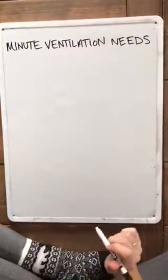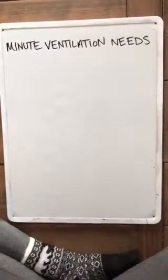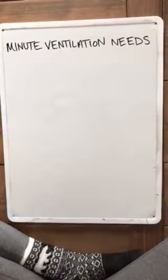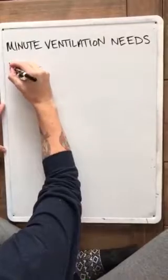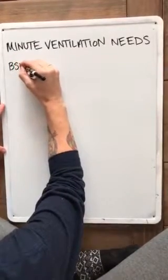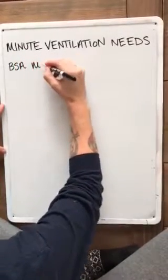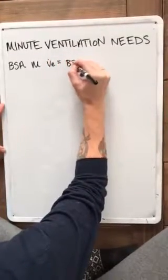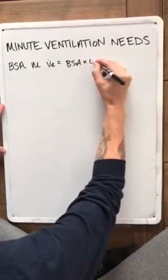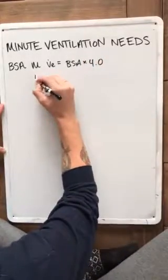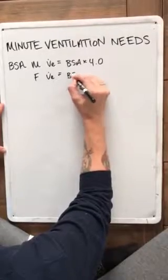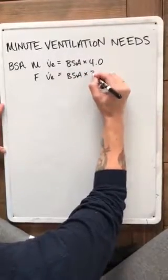Chapter 6 talks about your minute ventilation needs. We can do this numerous ways. We could use our BSA, which for males means your minute ventilation estimation would be your BSA times 4, and for females your minute ventilation estimation would be your BSA times 3.5.